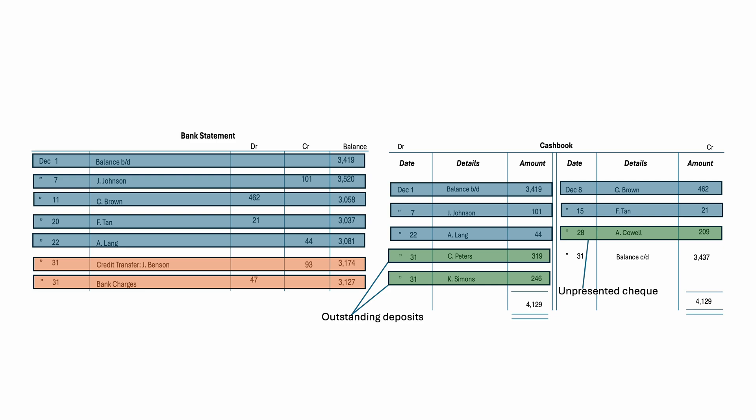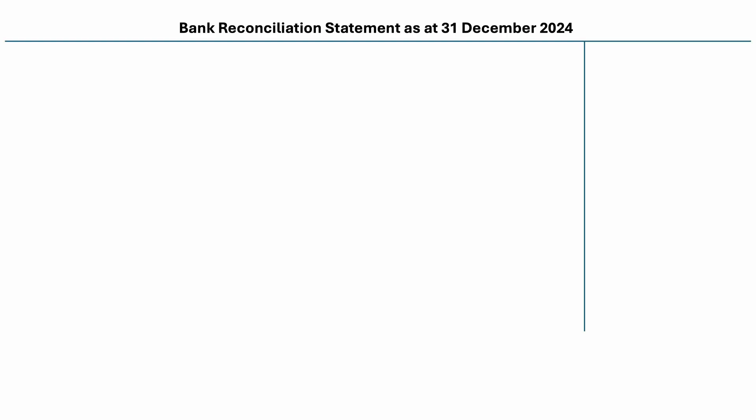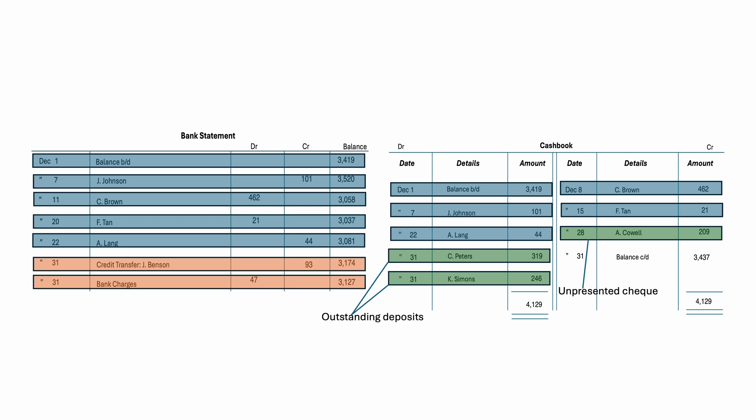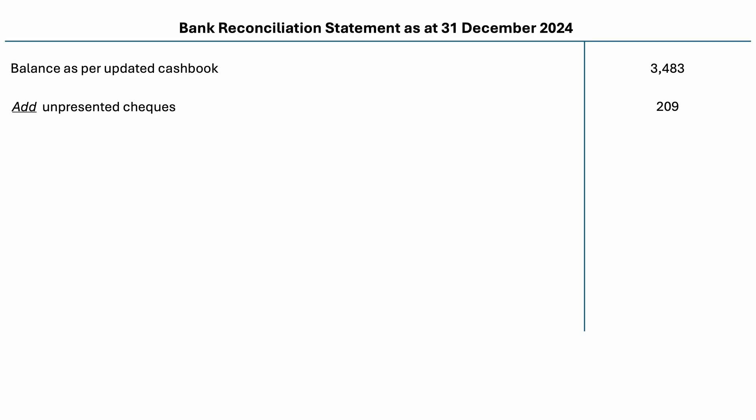Now let us create the bank reconciliation statement. The first step is to enter the balance as per the updated cash book. The next step is to add unpresented checks. Looking back at our cash book, there was only one unpresented check with an amount of $209. The unpresented check is added because if this transaction were recorded in the bank statement, it would have increased the balance. Adding these two gives $3,692.